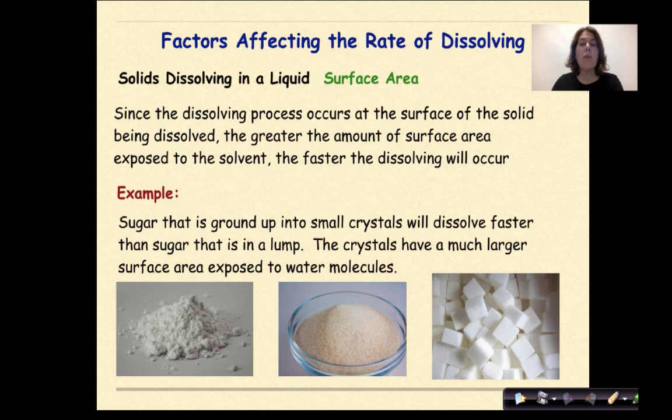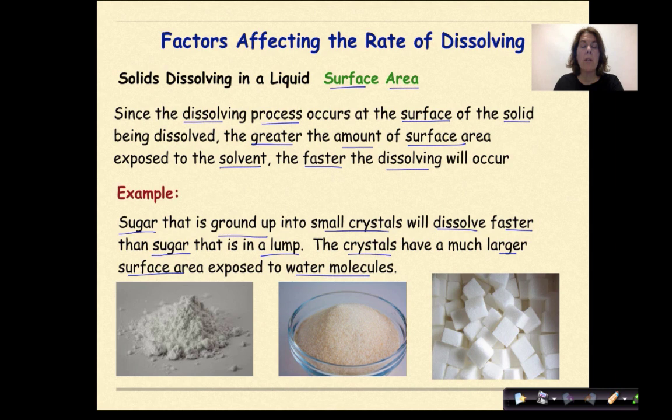Solids dissolving in a liquid focus on surface area. Since the dissolving process occurs at the surface of the solid being dissolved, the greater the amount of surface area exposed to a solvent, the faster the dissolving will occur. For example, sugar that is ground up into small crystals will dissolve faster than sugar that is in a lump. The crystals have much larger surface area exposed to water molecules.